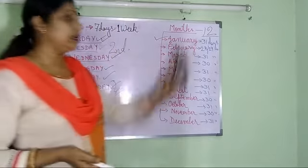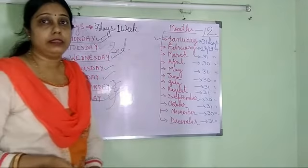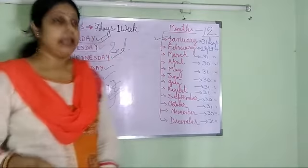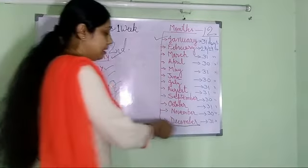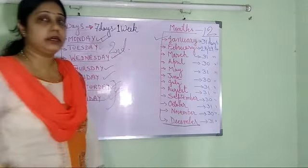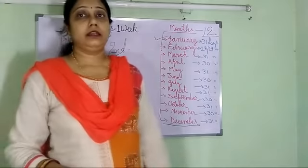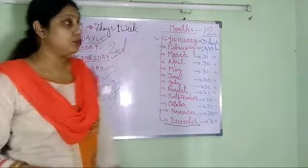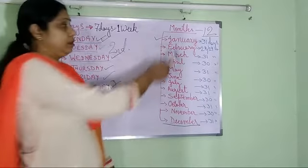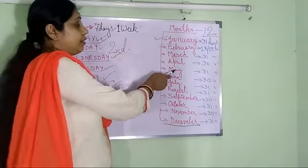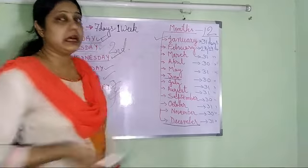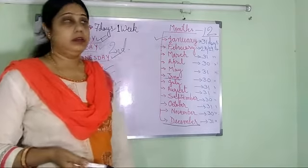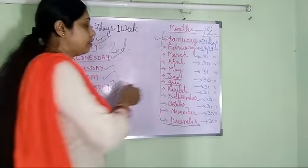January is the first month of the year, and December is the last month of the year. Any year you will find December is the last month. Which is the sixth month? You count 1, 2, 3, 4, 5, 6 — June is the sixth month of a year. July is the seventh month.